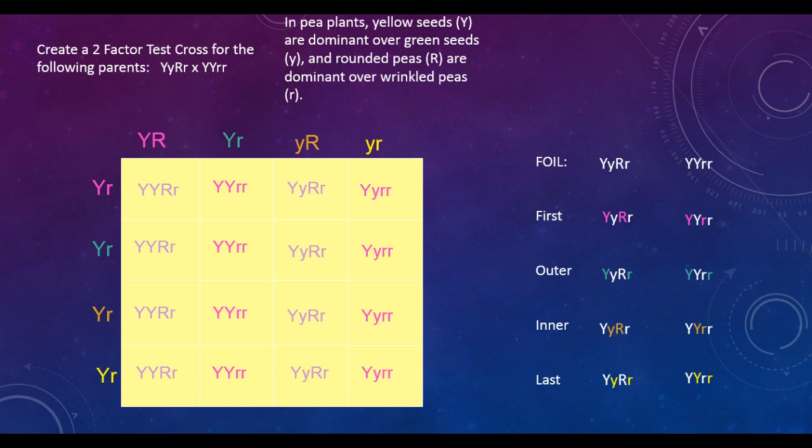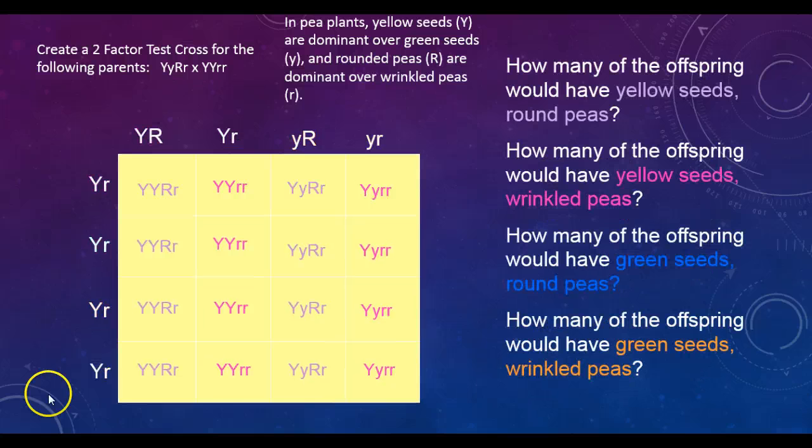And then we'll do the last column as well. So, now we have all pieces of our test cross. What we need to do now is perform an analysis on this test cross. Now it's time to do our analysis on this two-factor test cross. We can figure out all the information we need by looking at this test cross and basically answering the four questions to the right. And these are our different phenotypes that we would find based on the information on this test cross.